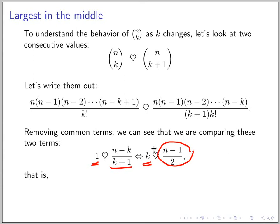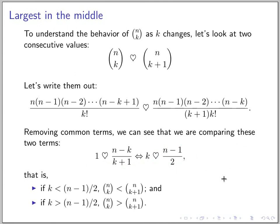So that means that if k is smaller than this, it means that the next value is increasing. But if k is larger, then the next value is smaller. So the cutting point is when k meets n minus 1 over 2. So in the summary, if k is less than this, then we are moving up.